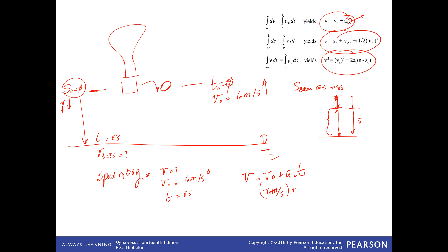The acceleration is going down, so it's positive: 9.81 meters per second squared, and the time is 8 seconds. So it all depends on what you use as positive or negative. I used downward as positive, so the acceleration is positive because it goes down, but the initial velocity is negative because it's going up. The velocity of the bag when it hits the ground is 72.5 meters per second, and because it's positive, it's going downward.